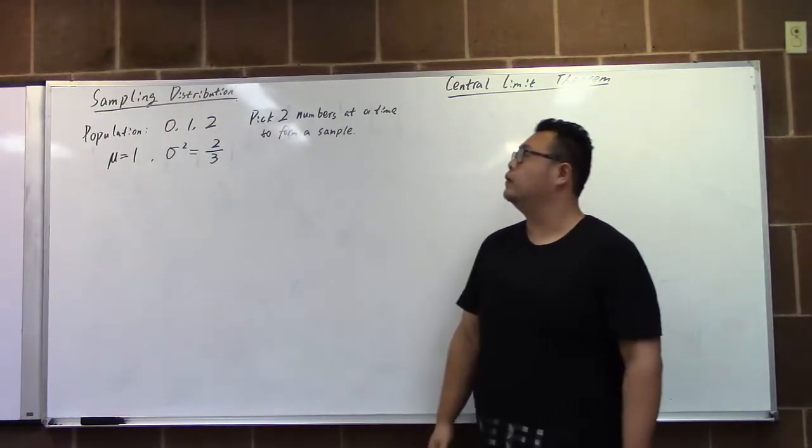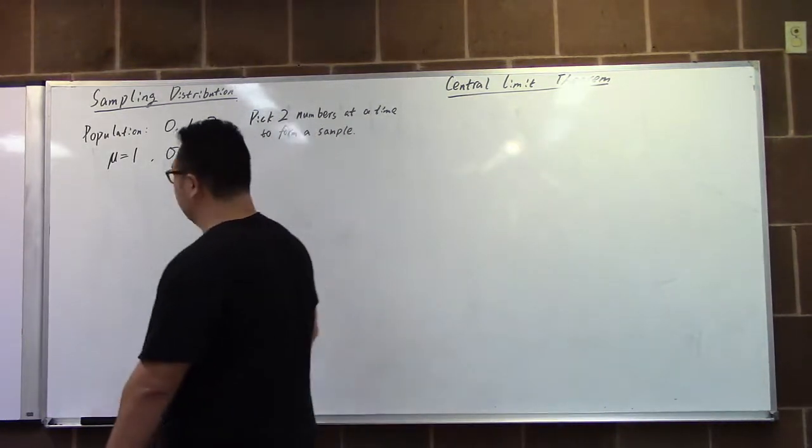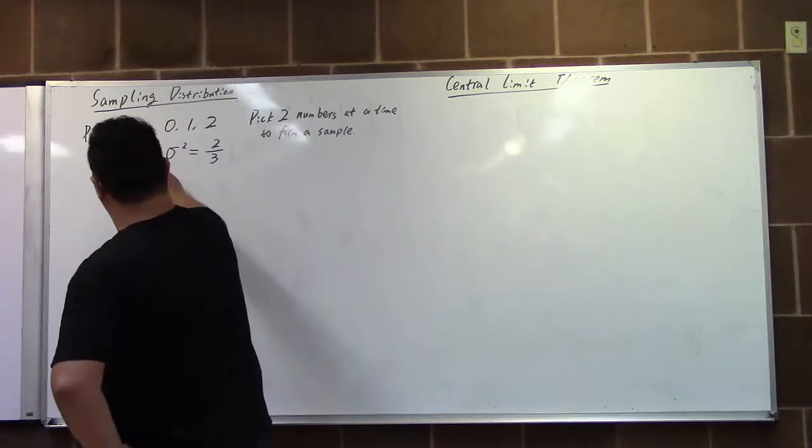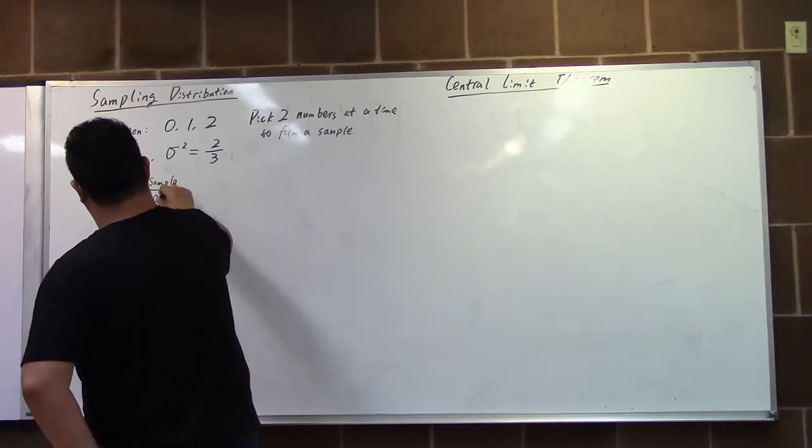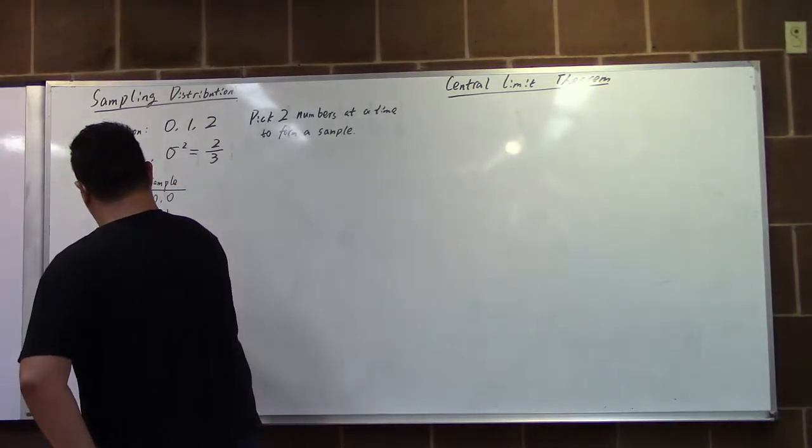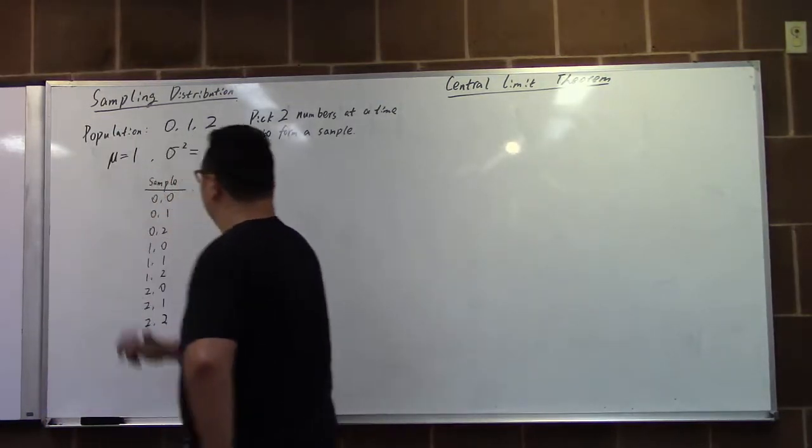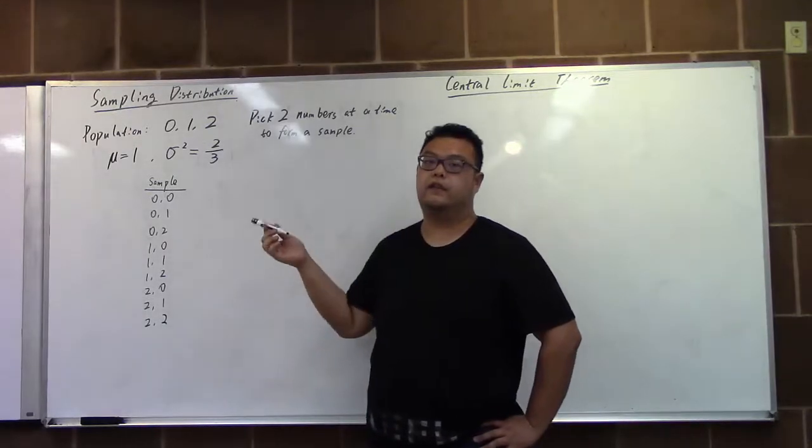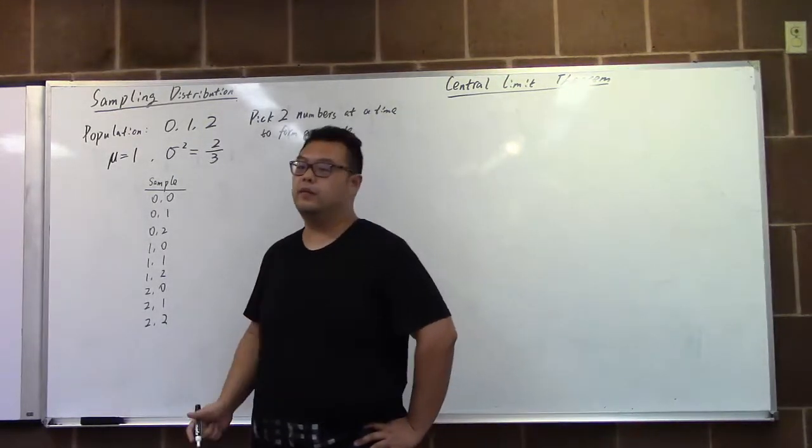Then we can form the sampling distribution. Let's sample it first. We will have nine different samples of size 2. From there we're able to find the sample mean.